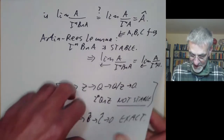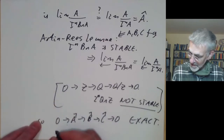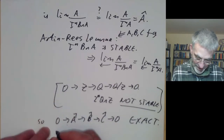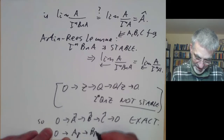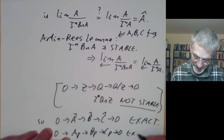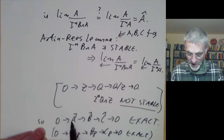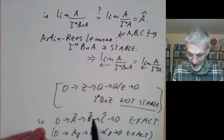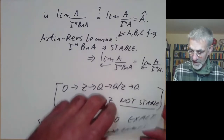This is the first lemma — the analog of the localisation result that 0 → A_P → B_P → C_P → 0 is exact. The key distinction is that for localisation this holds for all modules, whereas for completion it only holds for finitely generated modules over a Noetherian ring.